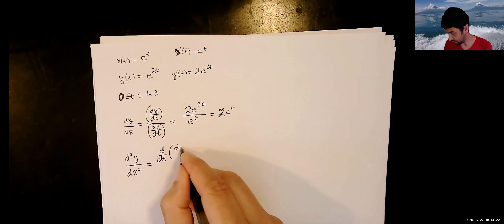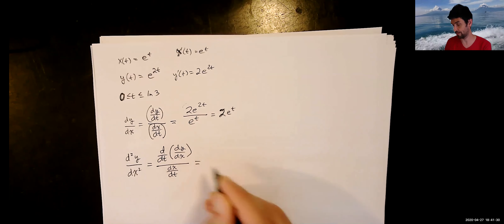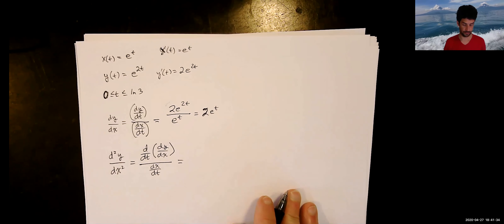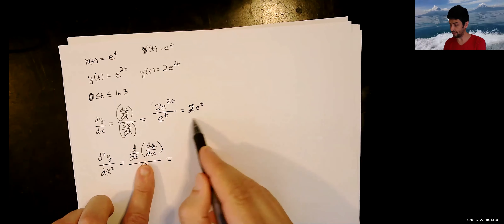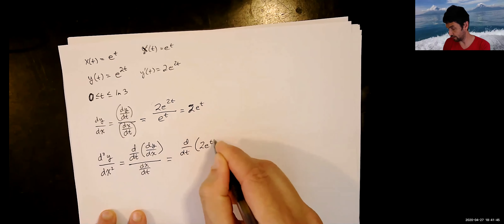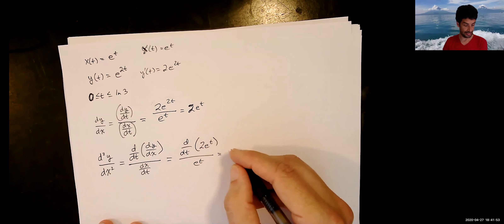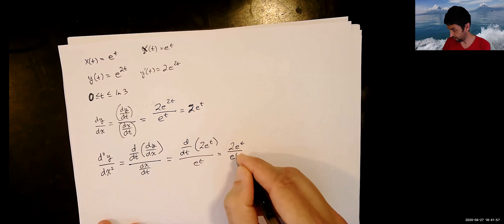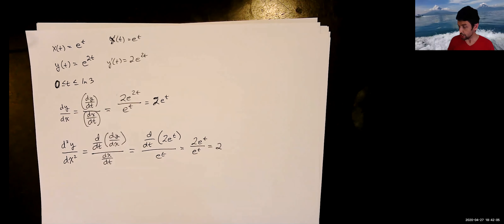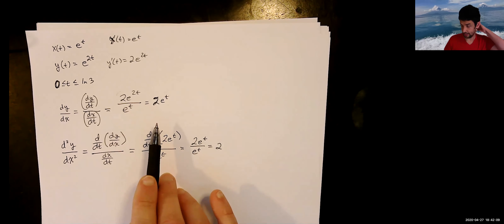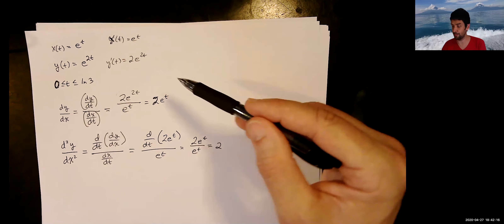So let's compute the second derivative. The formula is d²y/dx² equals d/dt of (dy/dx) divided by dx/dt. Here dy/dx is 2e to the t, so we take d/dt of 2e to the t, which is 2e to the t, and divide by dx/dt which is e to the t. This gives 2e to the t over e to the t, or 2. That's our second derivative.